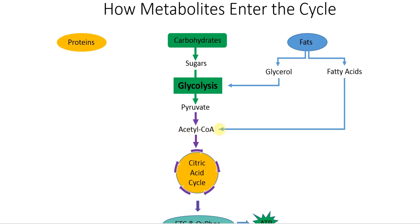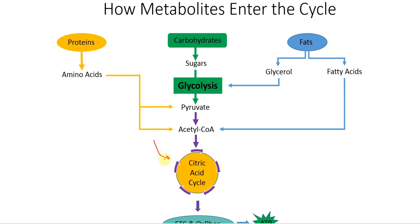What about proteins? When proteins are broken down into amino acids, there are 20 different amino acids that are naturally occurring in the body. Each of them is broken down in somewhat unique ways, so there are actually several options for amino acids to enter the citric acid cycle. The two most common are via pyruvate or acetyl-CoA, but there are a few amino acids that can actually enter straight into different parts of the cycle itself.